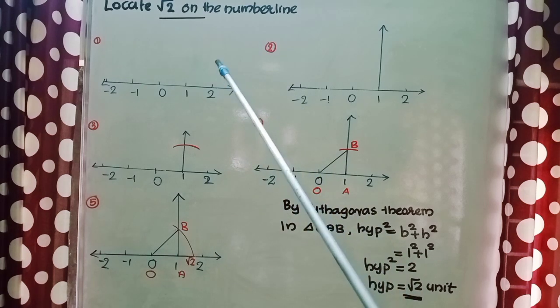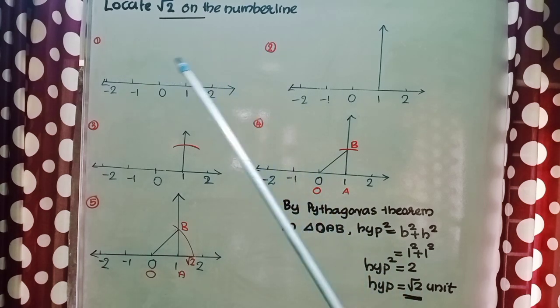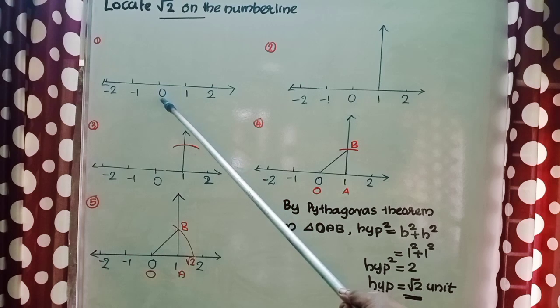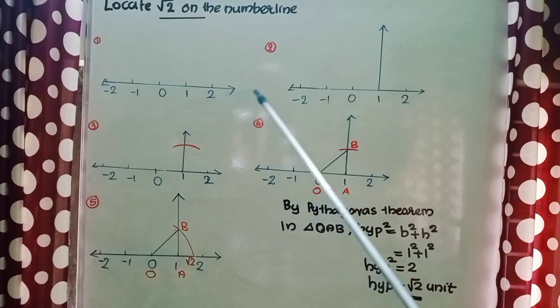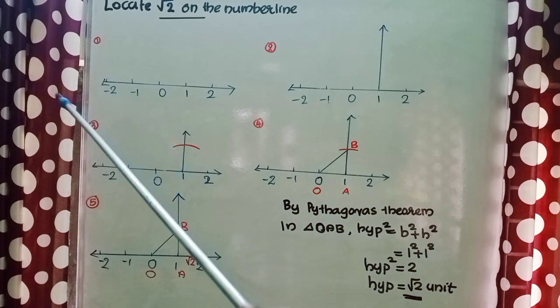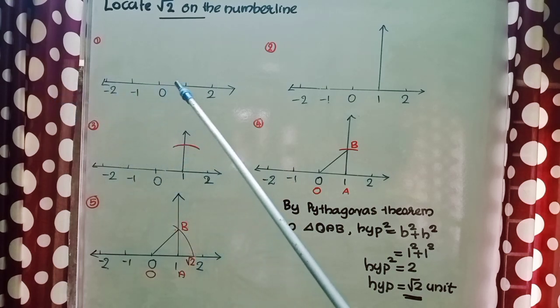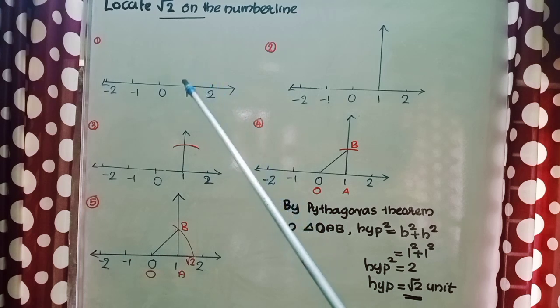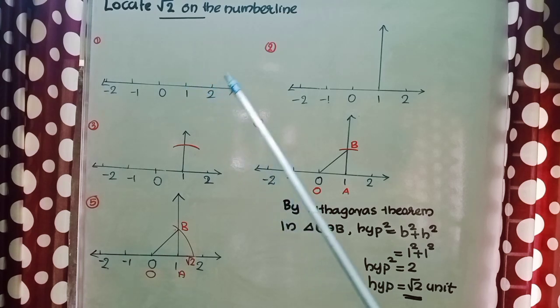First let us draw the number line and mark the numbers on it. Here I have drawn a number line and I marked 0 here, 1, 2, 3, etc. in the positive direction, minus 1, minus 2, etc. in the negative direction. Each number is having 1 unit distance.